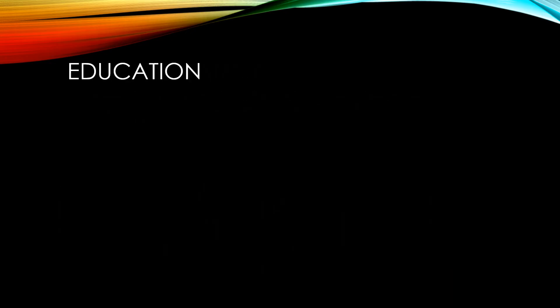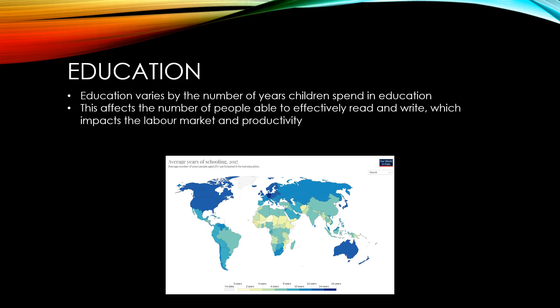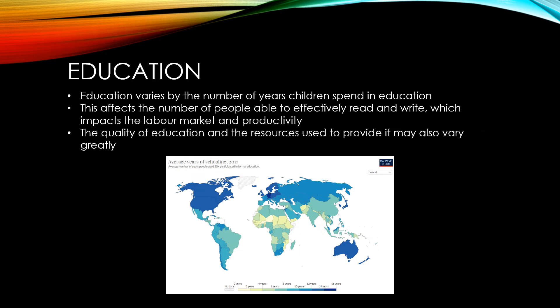Education varies greatly between different countries in terms of the number of years children are likely to spend in education. This affects the number of people able to effectively read and write in each country, which impacts the labour market and productivity for those countries. The quality of education and the resources used to provide it may also vary greatly. Developed nations are likely to have better facilities, greater access to technology, and lower teacher to pupil ratios than those in less developed nations.